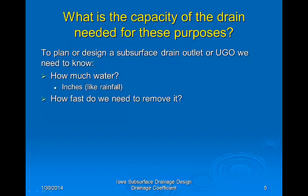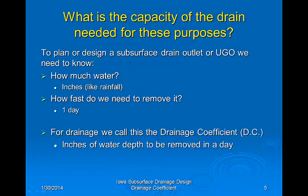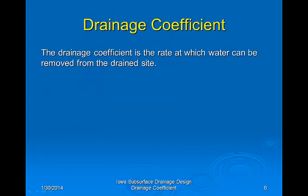The next question is how fast we need to remove this depth of water — in minutes, hours, days, or weeks? Since we're usually dealing with large areas in a cropland situation, minutes or hours probably don't make sense. So we choose the day as our unit of time, similar to how we think of precipitation, and define the drainage coefficient in terms of inches per day — the rate at which water is removed from the site in a day, expressed as inches of depth.